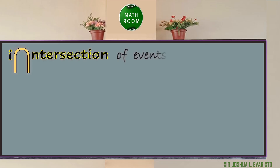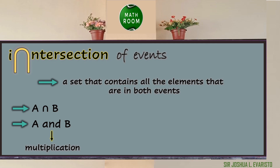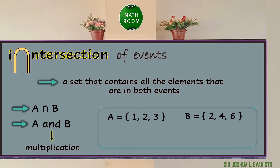How about the intersection of events? Intersection is a set that contains all the elements that are in both events. Intersection is denoted by A intersection B, which means A and B. In probability, the conjunction AND means multiplication. For example, if event A consists of {1, 2, 3} and event B consists of {2, 4, 6}, then to find A intersection B, we look at the outcome present in both events, which is 2. Therefore, the intersection of A and B is equal to {2}.